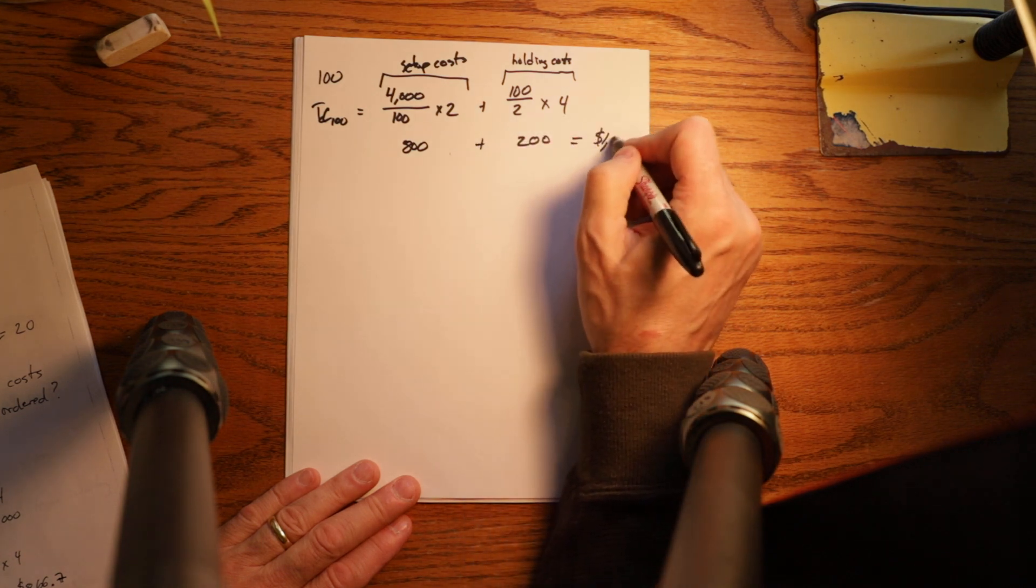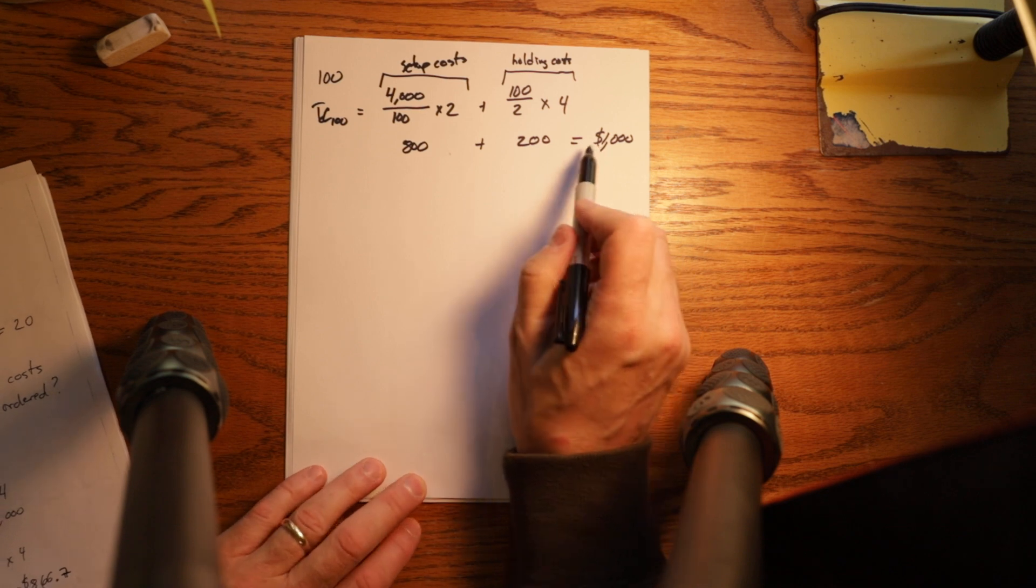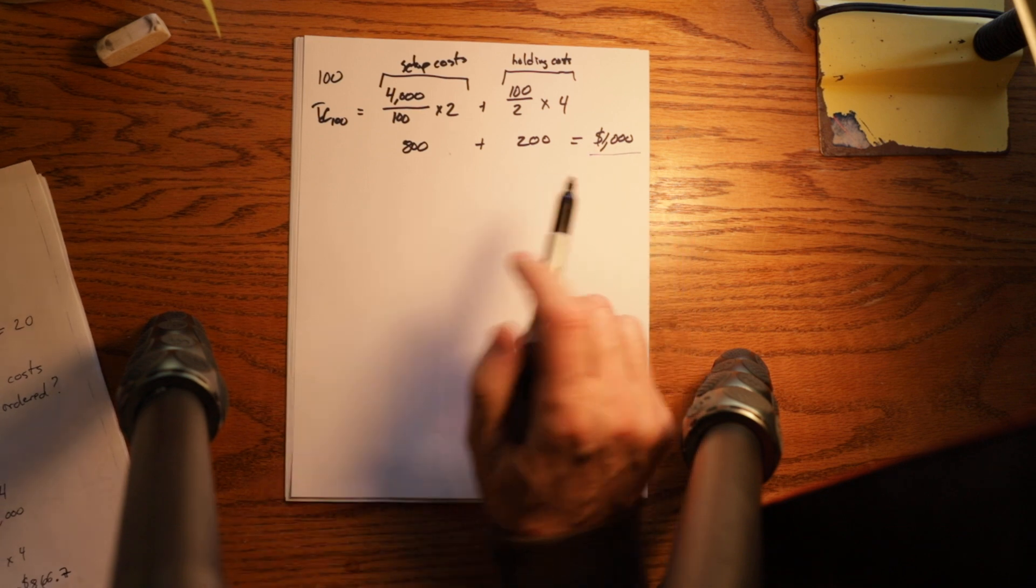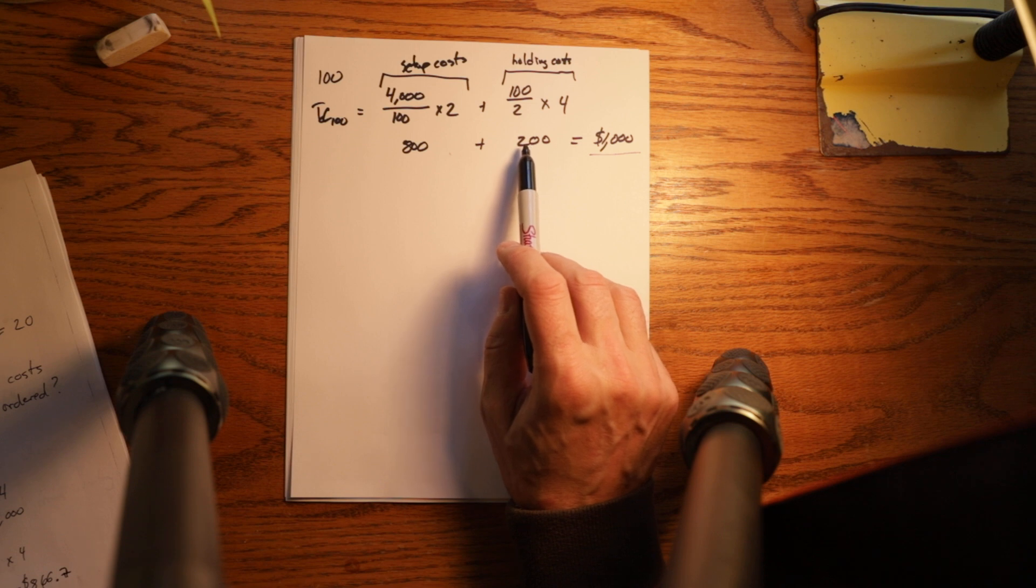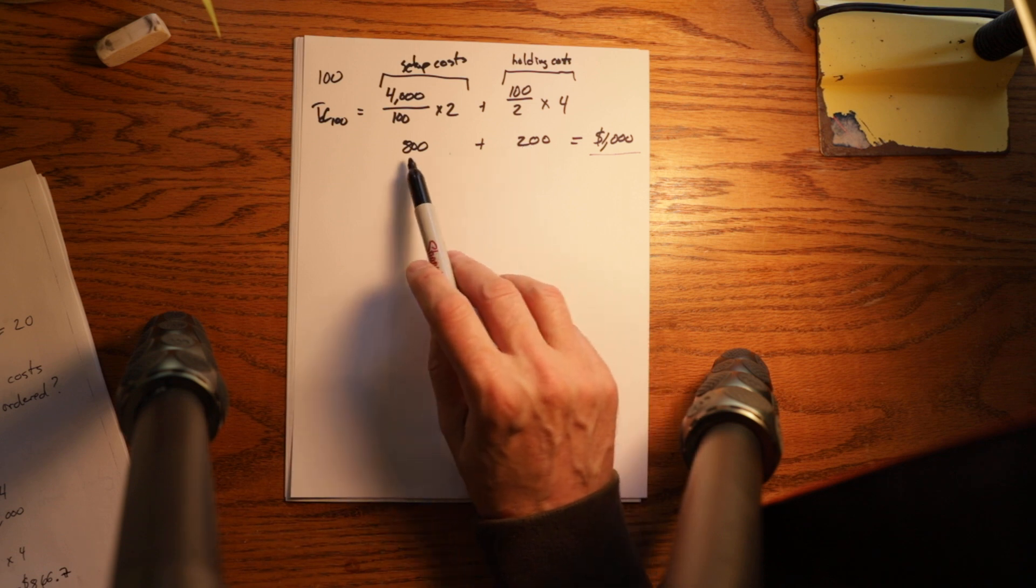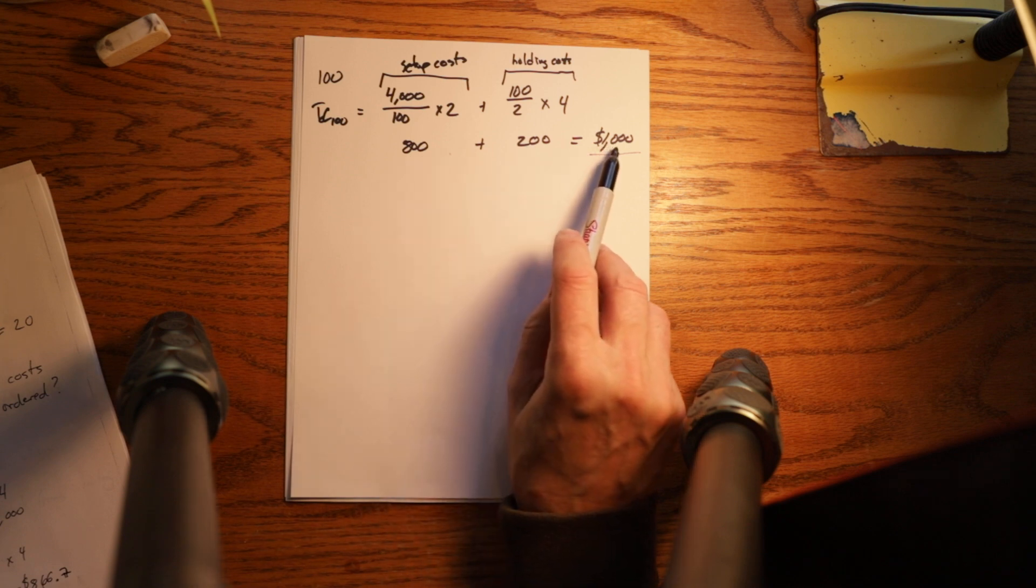So what you notice is overall costs went up from $800 to $1,000. Holding costs went down because we're holding less inventory. But setup costs went up because we're ordering more times. And so we're not at the place where those two are equal. And so our total costs have gone up.